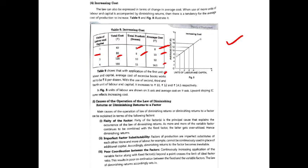Next is imperfect factor substitutes. Factors of production are imperfect substitutes of each other. For example, if there is machinery and one wants more production, you cannot simply replace machinery with more labor. Machinery may require only 5% effort, but to get the same production increase without it, 20-30% more labor would need to be employed. Because factors are imperfect substitutes, beyond a point production starts diminishing.